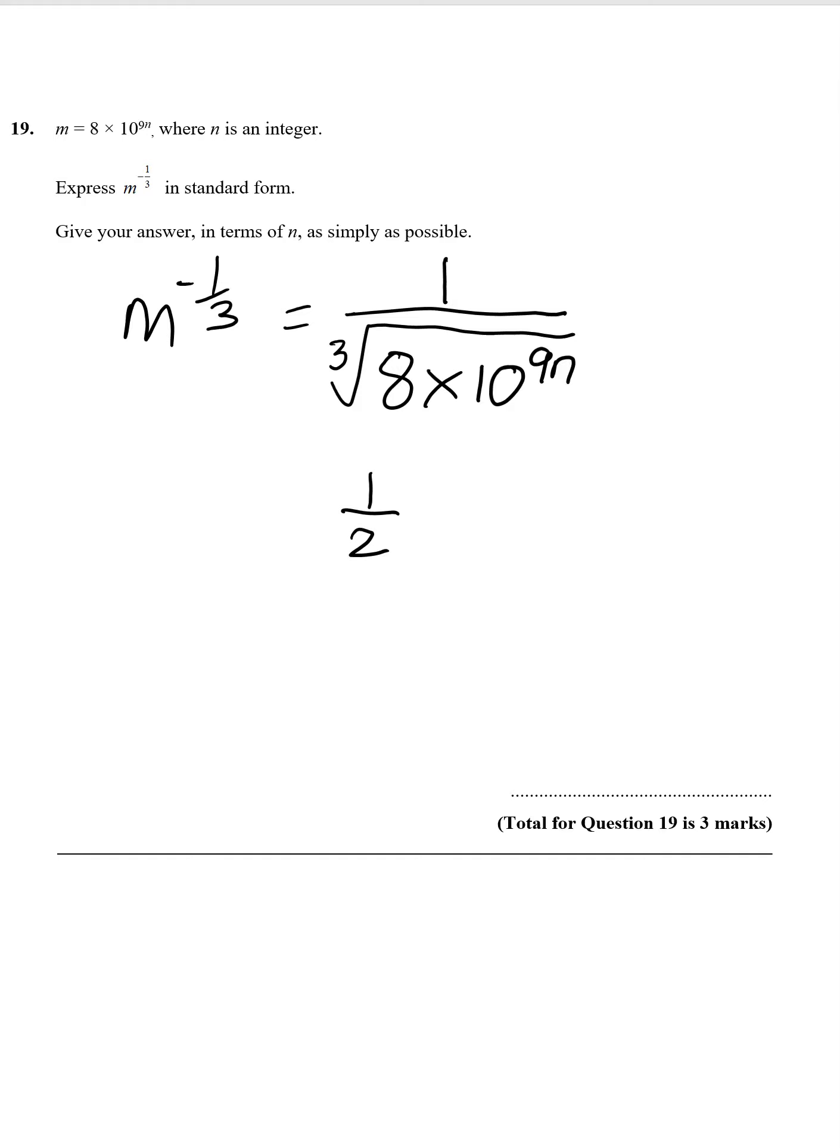If we were to cube root this, in other words, if we did 10 to the 3n times 10 to the 3n times 10 to the 3n, we'd have 10 to the 9n. So we can actually just divide the power by 3, which gives us 1 over 2 times 10 to the 3n.